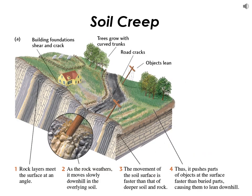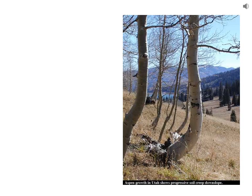Another example of mass wasting that's not quite as fast and dramatic is called soil creep. As the name implies, it's a pretty slow process. If you see a slope with a lot of tilting — tilted power lines, tilted fences, buildings with cracks in their foundations, and trees that curve — it means the slope is moving fairly slowly. This is often seen in soils. Let me draw how soil creep works.